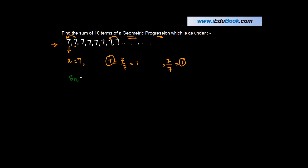Traditionally, the sum of n terms of a GP is: Sn = a(1 − r^n) / (1 − r). However, this formula is not applicable when r = 1, because the denominator becomes 0 — that is, 1 − r = 0.